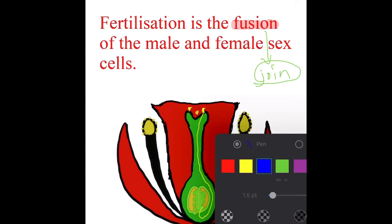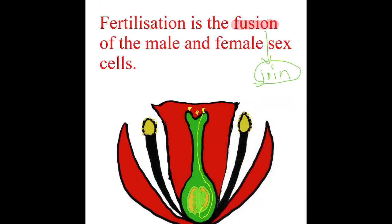After the ovary is fertilized, it will swell and turn into a fruit. All the other parts of the flower, like the anther, the filament, the style, and the petals, will wither away.